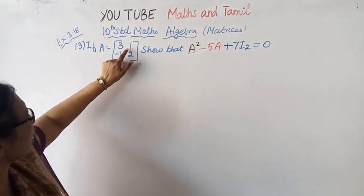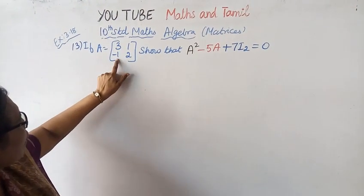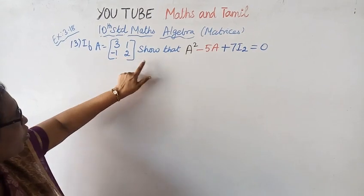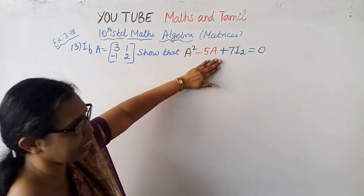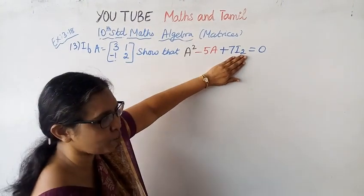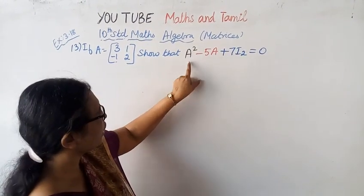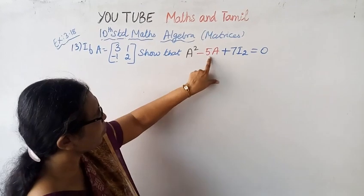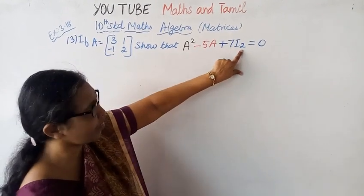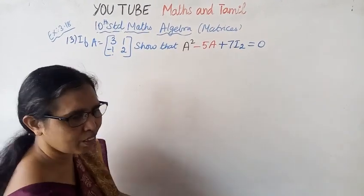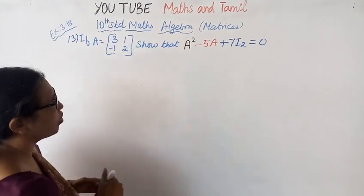If A is equal to [[3, 1], [-1, 2]], show that A squared minus 5A plus 7I₂ is equal to zero.